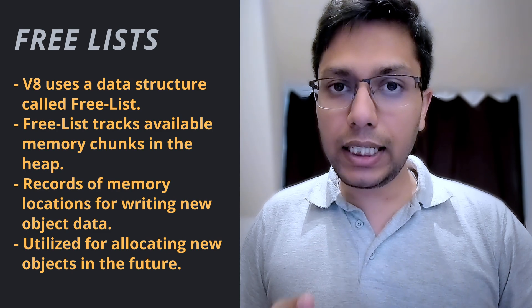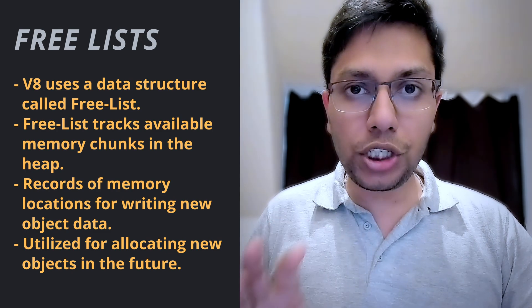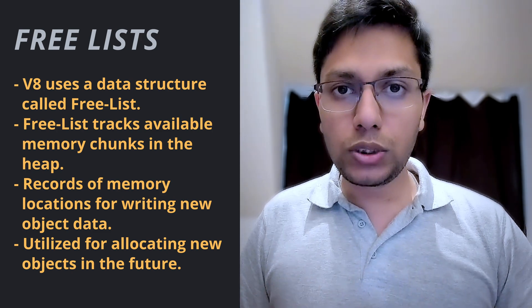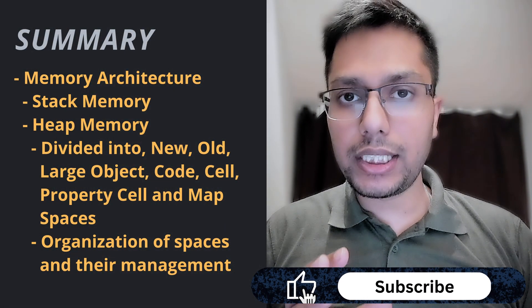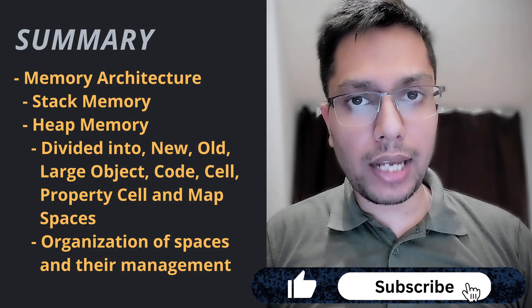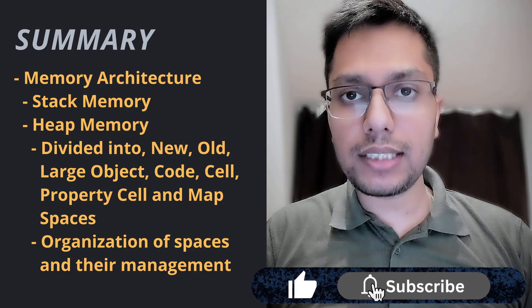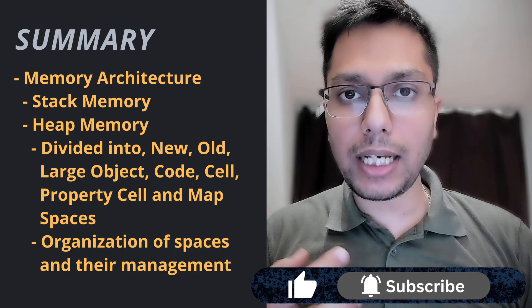Each garbage collection cycle frees up memory chunks all over the heap space. And if an entire page is freed up, then that page is removed from the space. By the way, V8 keeps track of these free memory chunks using a data structure called free list. So to summarize, we discussed memory architecture and how heap spaces are organized and managed.